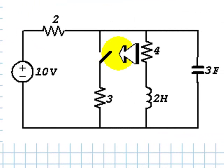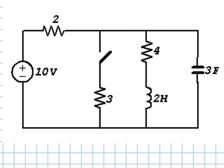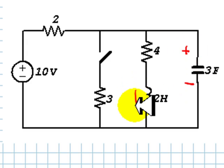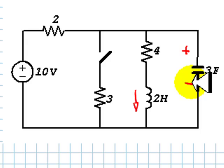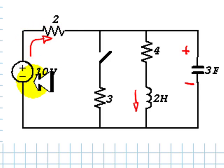The switch has been open for a very long time. At t equals zero, the switch closes. Find, for the instant right after the switch closes — the time we call t equals zero plus — what is the voltage in this capacitor, the current in this inductor, the derivative of this voltage in the capacitor, the derivative of the current, and more. Also find the current in the source and the derivative of the current in the source.